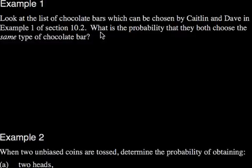In this first example, you have to remember what we did in the previous video, which is where we had Caitlin and Dave with those two chocolate bars. And the chocolate bars they could have had would be A or B or C or D. And it's asking, what is the probability that they both choose the same type?